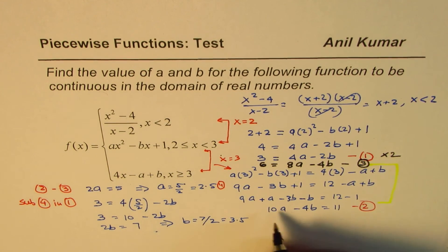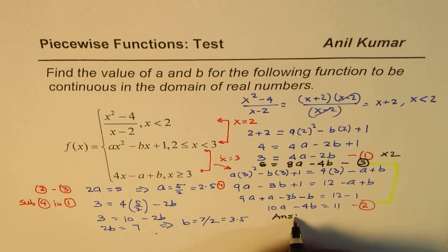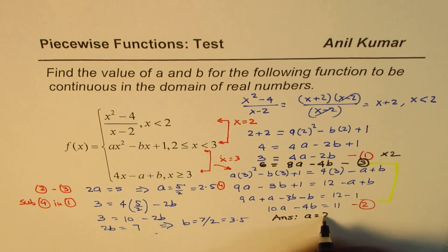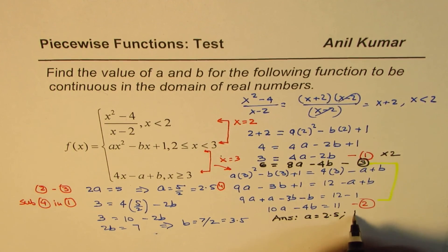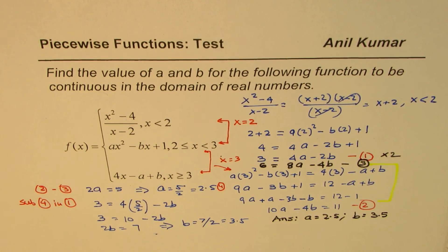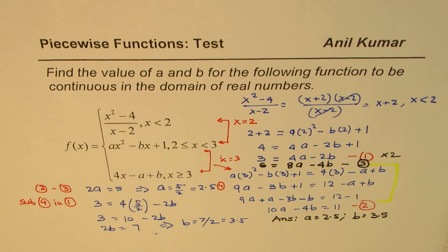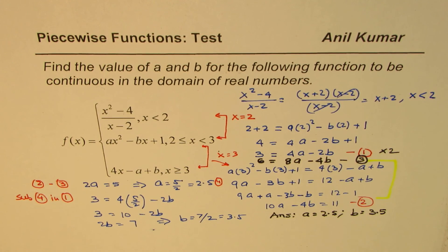Let me write down the answer here. Answer is a equals 2.5 and b equals 3.5. I'm Anil Kumar and I hope these steps help you to solve such questions. Feel free to share your questions and subscribe to my videos. Thank you and all the best.